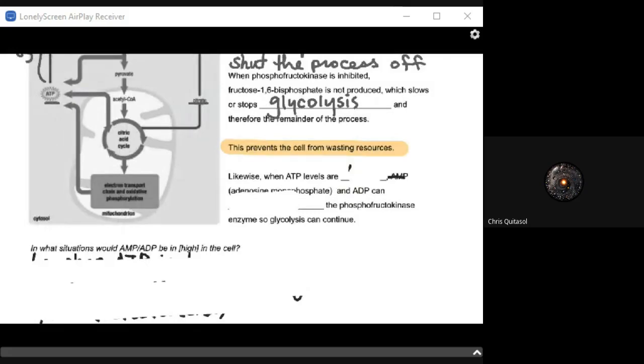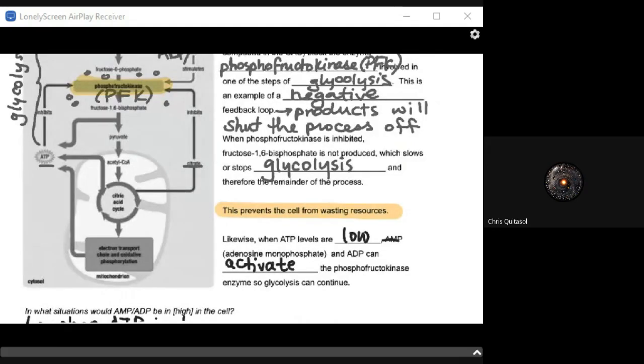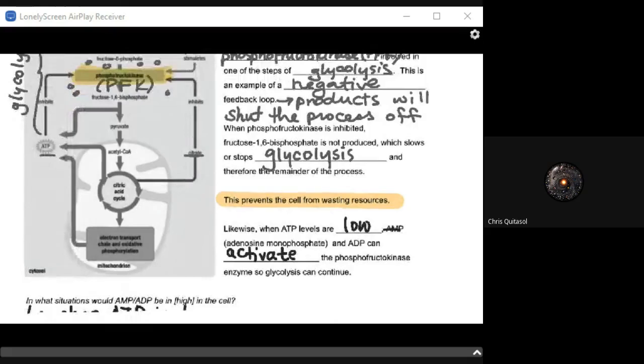Likewise, when ATP levels are low, we're going to look at that adenosine monophosphate, AMP, and ADP can activate that PFK enzyme so glycolysis can continue. Once ATP starts getting used up and it gets turned into that ADP as well as AMP, which is that adenosine monophosphate, once it starts to break down that ATP into those phosphate ions and the precursor to ATP, those molecules now activate that PFK. So they bump out the ATP, they bump out the citrate, and they now bind to those allosteric sites to activate PFK, which will now start to do all of its enzyme processes to create those intermediates that leads to pyruvate, which allows for the production of ATP through the entire cellular respiration process.